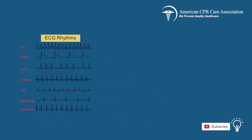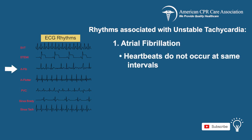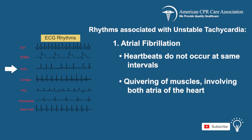Now let's look at the rhythms associated with unstable tachycardia. The first is atrial fibrillation, which is when the heartbeats do not occur at the same intervals. It is known as a quivering of the muscles and involves both atria of the heart.